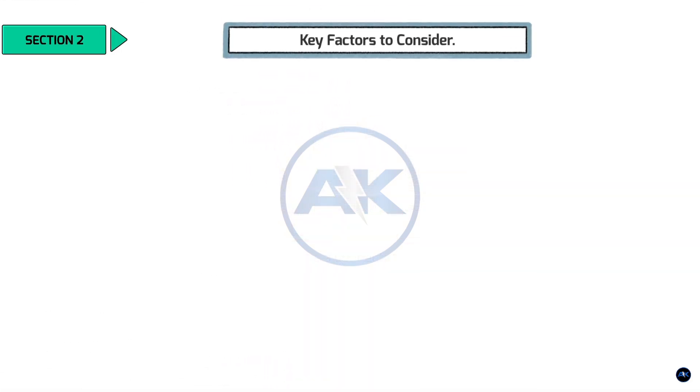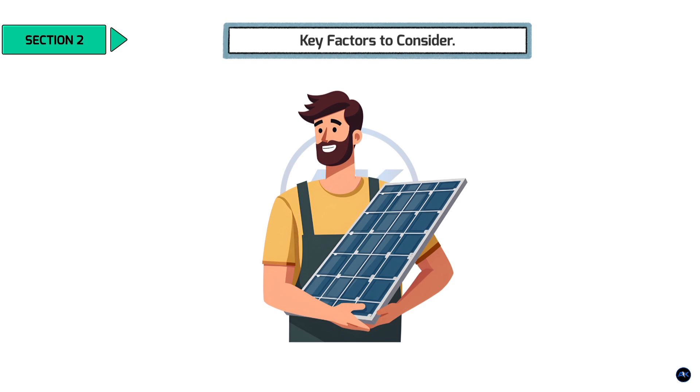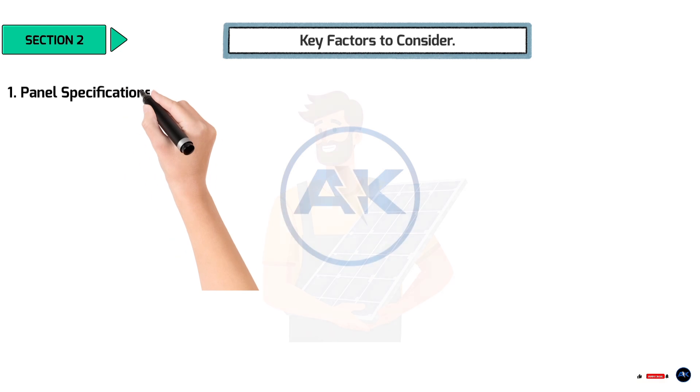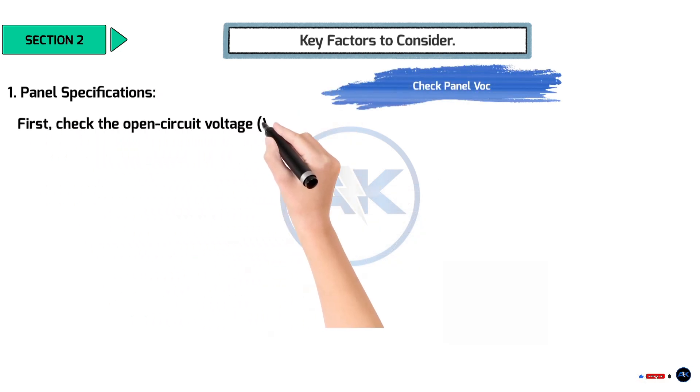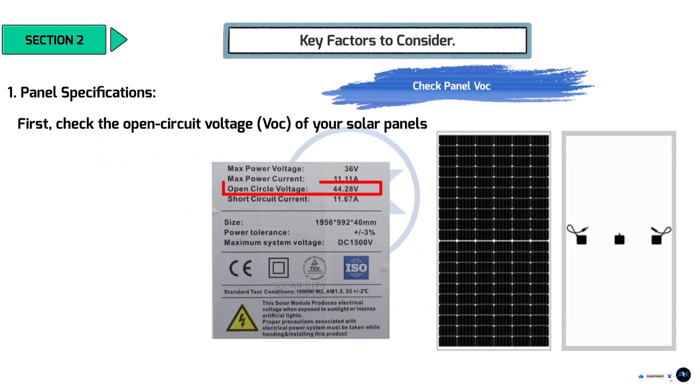Section 2. Key Factors to Consider. Now, let's talk about the key factors you need to consider when determining how many panels you can safely connect in a string. First, check the open circuit voltage, VOC of your solar panels. This is usually listed on the back of the panel or in the datasheet. VOC is the maximum voltage the panel can produce when there's no load connected.